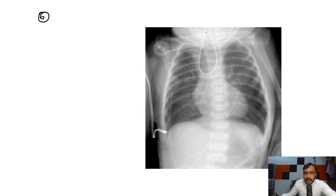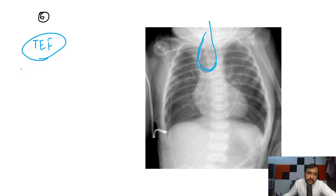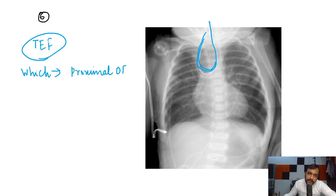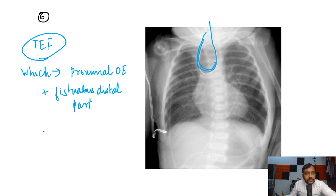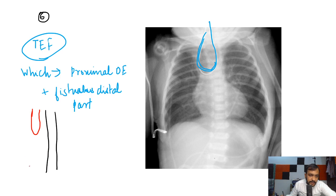In this picture you see an NG tube that is coiled on itself, and this is seen in tracheoesophageal fistula. The most common type of tracheoesophageal fistula has proximal esophageal atresia with a fistulous connection in the distal part to the trachea. So the esophagus is atretic and the fistulous connection is in the distal part.